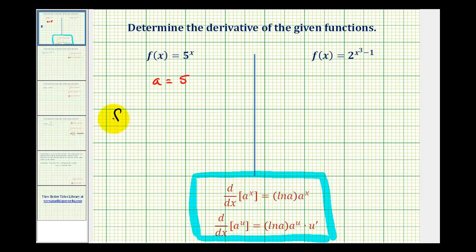So f prime of x is equal to natural log a or natural log 5 times a to the x which is 5 to the power of x.